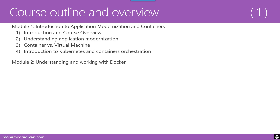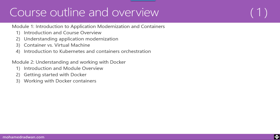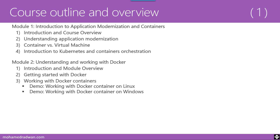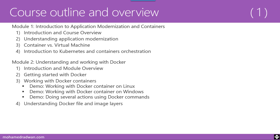In Module Two, Understanding and Working with Docker, the first lesson is an introduction and module overview. Lesson Two is Getting Started with Docker. Lesson Three is Working with Docker Containers, covering how to work with Docker using several commands, with demos for Docker on a Linux machine, Docker on a Windows machine, and executing several Docker commands. Lesson Four is Understanding Dockerfile and Image Layers, focusing on how the Dockerfile works and how it translates into layers.